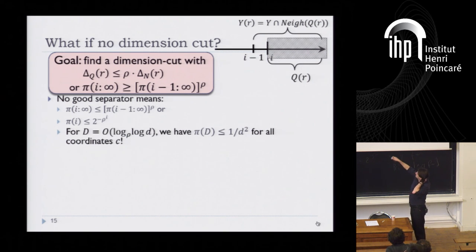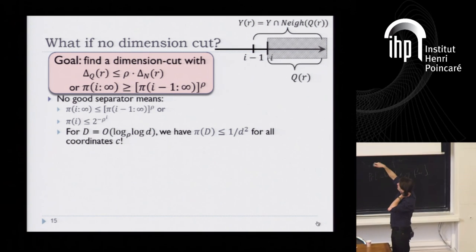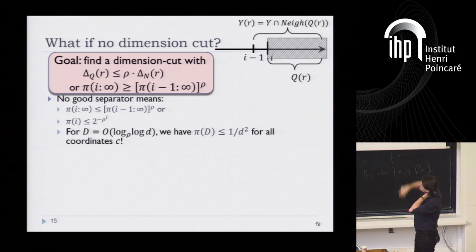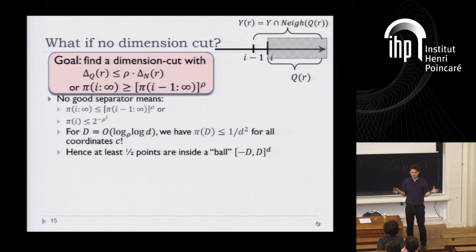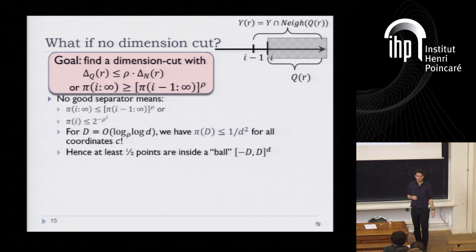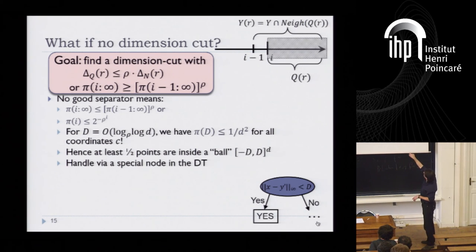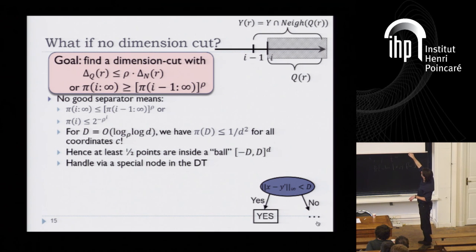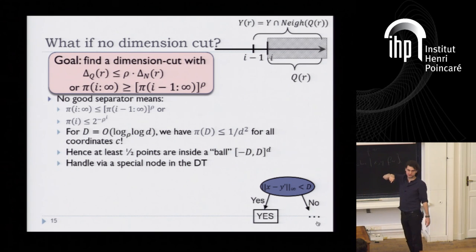When you go out log log d steps, the distribution pi has dropped so little that it is less than something like one over d squared for all coordinates c. This means a large fraction — something like half — of the points will be inside a ball with side length something like log log d. You can put a special node asking is X close to the center of this box. If it is close, that means half the data set is there. This is where the approximation of log log d comes from.